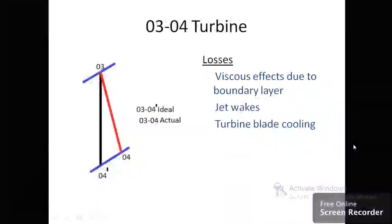The next device is the turbine. Ideally a turbine operates as an isentropic process, but in practice the turbine has several losses. Pressure drops through the turbine create partial choking. Also, due to turbine blade cooling, the enthalpy of the fluid decreases, resulting in a non-isentropic process.